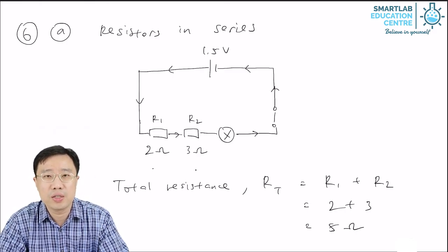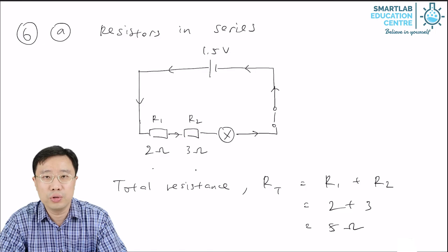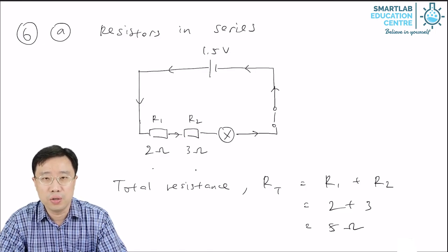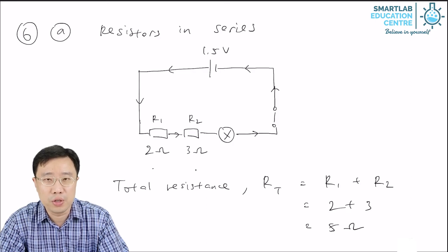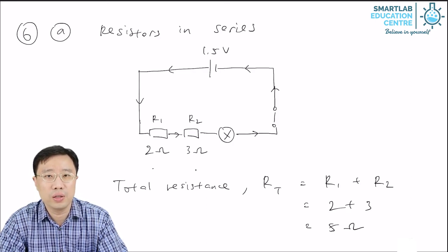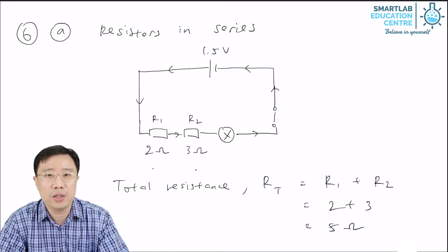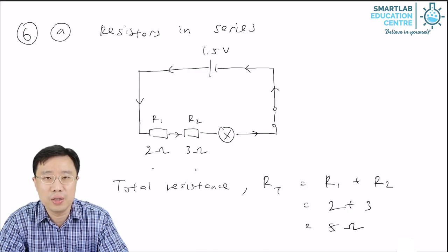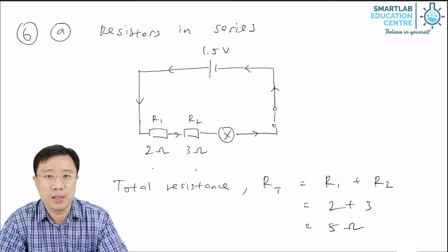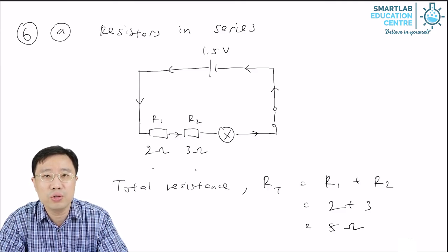Referring back to the case of R1 and R2 in series, you see that the total resistance is 5 Ohm, which is greater than each of R1 and R2. So this is how you check your answer. When you calculate the total resistance of resistors in series, the answer must be bigger than each of the individual resistance.